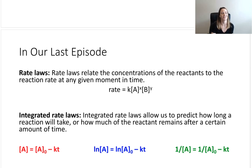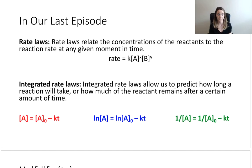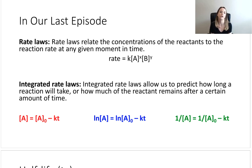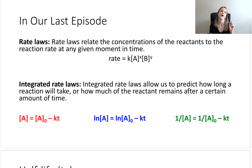I'll show you what I mean in just a second. So in our last episode, before I get into Half-Life, we talked about two different things. The first thing we talked about were rate laws, and rate laws relate the concentration of the reactants to the reaction rate at any given moment in time. We determined that if your concentration went up — more particles within your beaker or flask — your reaction rate also went up. The only exception was zero order, because that reactant is not involved in the rate.